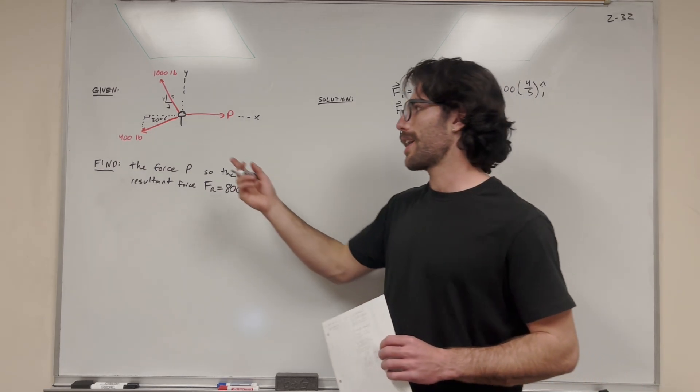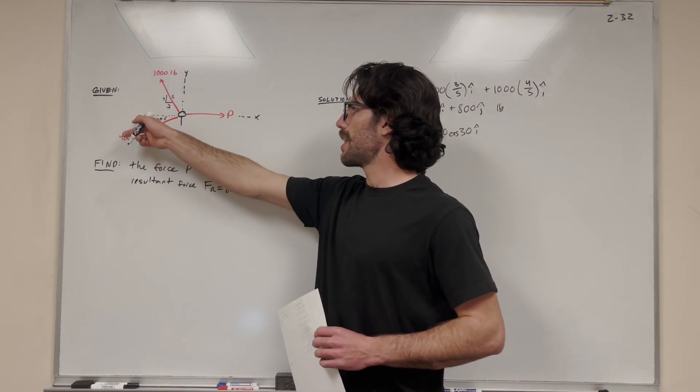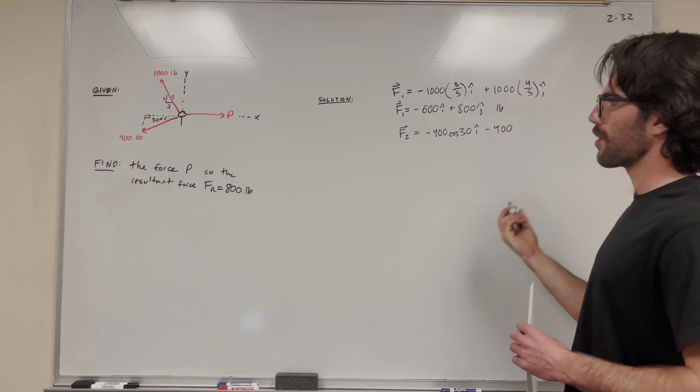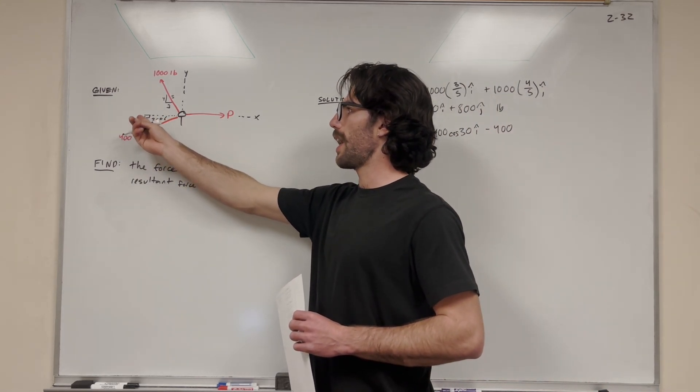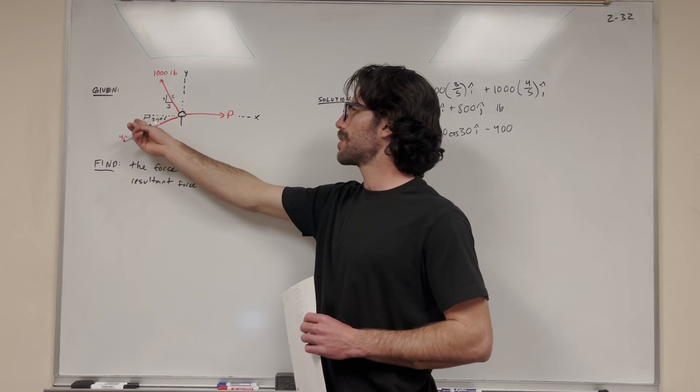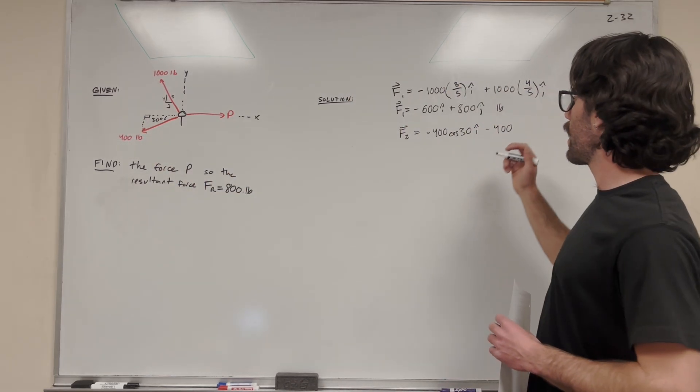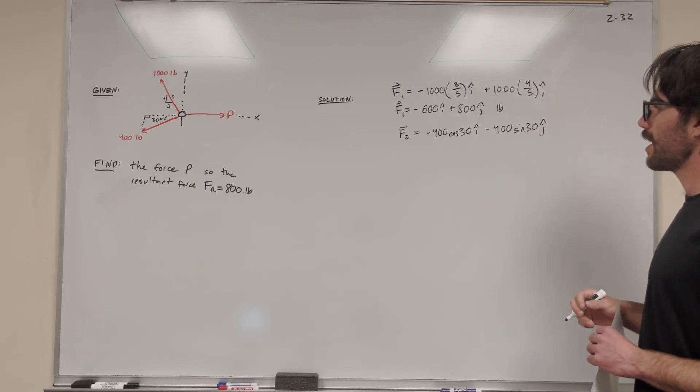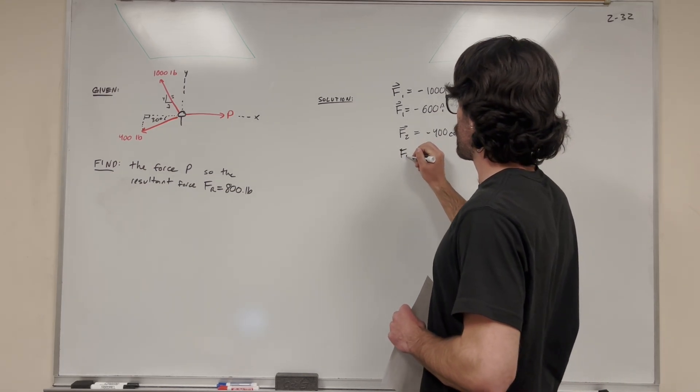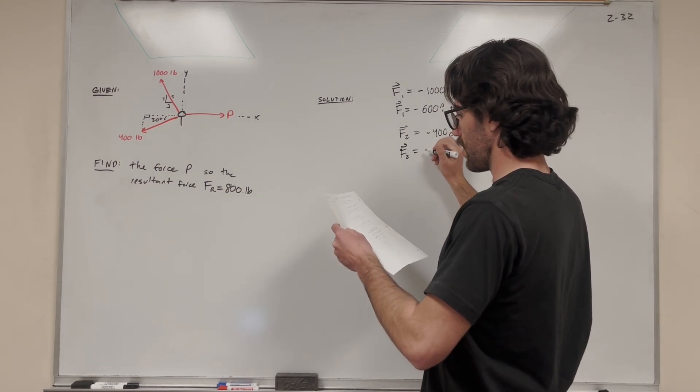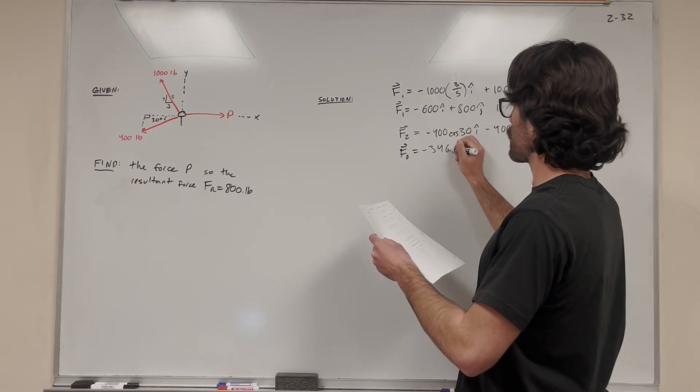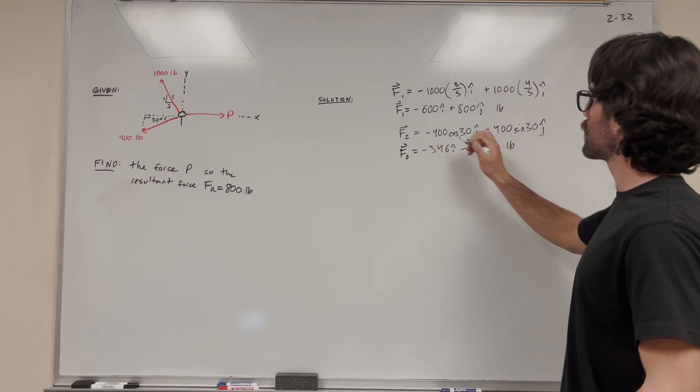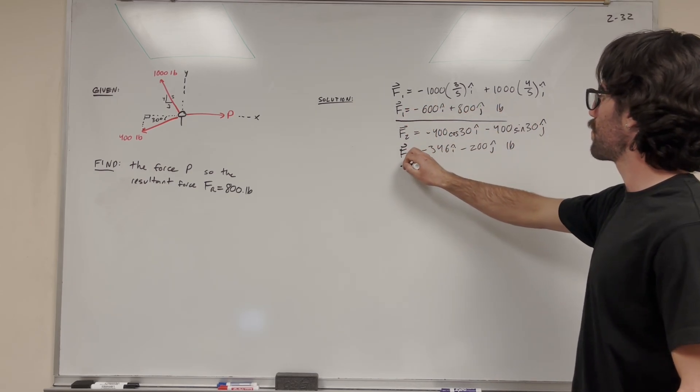For the j component, the y component, we're looking at this side here, which is the y. It's in the negative, so we subtract 400. We're looking for the side length opposite to the angle. For opposite, we use sine, so 400 sine of 30 j. This gives us negative 346i minus 200j pounds. So here are our two forces.